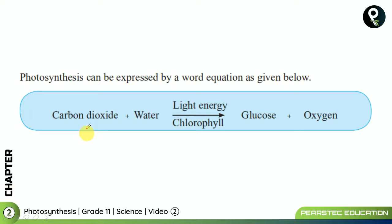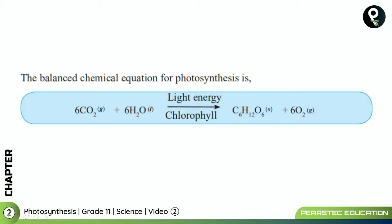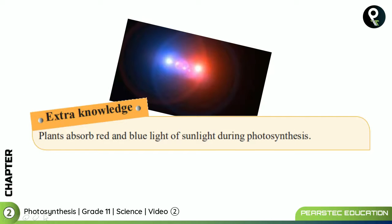Photosynthesis can be expressed by a word equation: carbon dioxide and water are the raw materials; chlorophyll helps trap light energy, glucose is produced, and oxygen is given away. The balanced chemical equation for photosynthesis is: 6CO2 (gas) + 6H2O (liquid) → C6H12O6 (solid) + 6O2 (gas), with light energy and chlorophyll being essential.